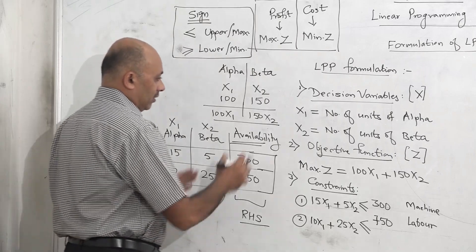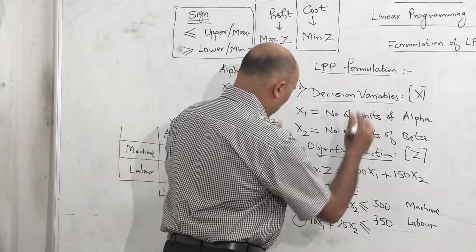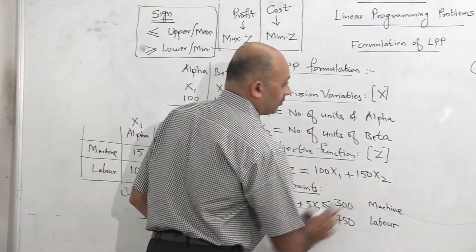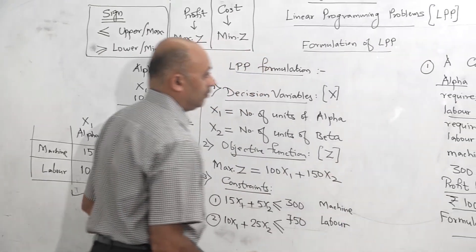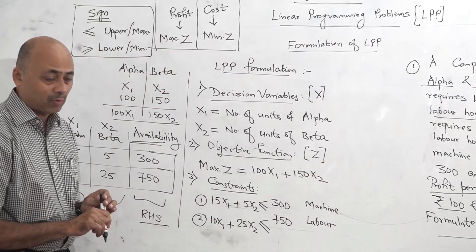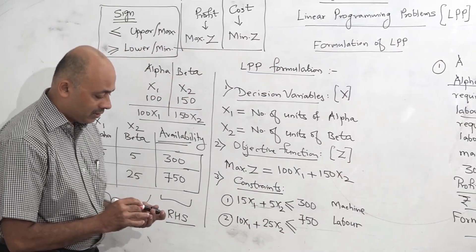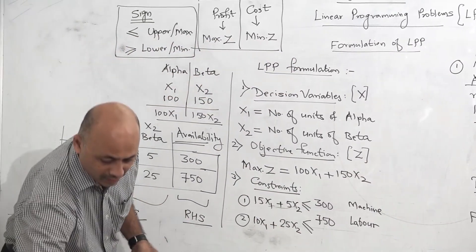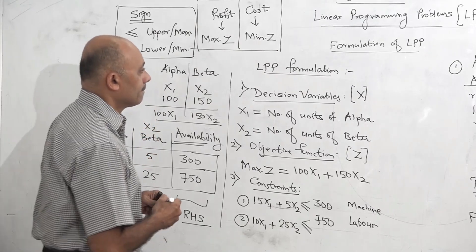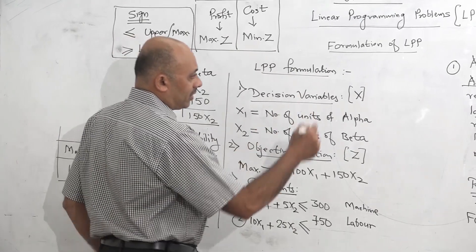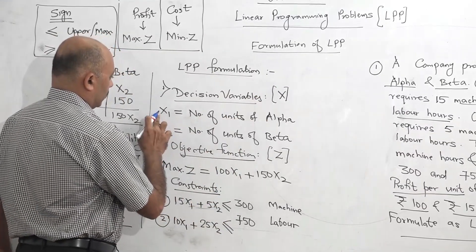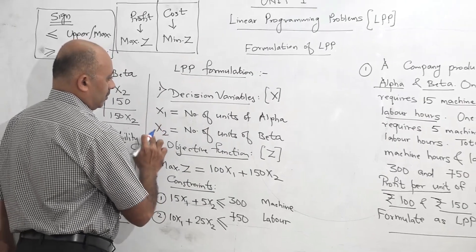If we take this formulation and verify with our data: there are two products — alpha and beta — so there are two decision variables. The objective function is max Z since profit is given, and profit per unit is rupees 100 and 150, so it is 100x1 plus 150x2. There are two resources — machine hours and labor hours — so there are two constraints, one for machine and one for labor.